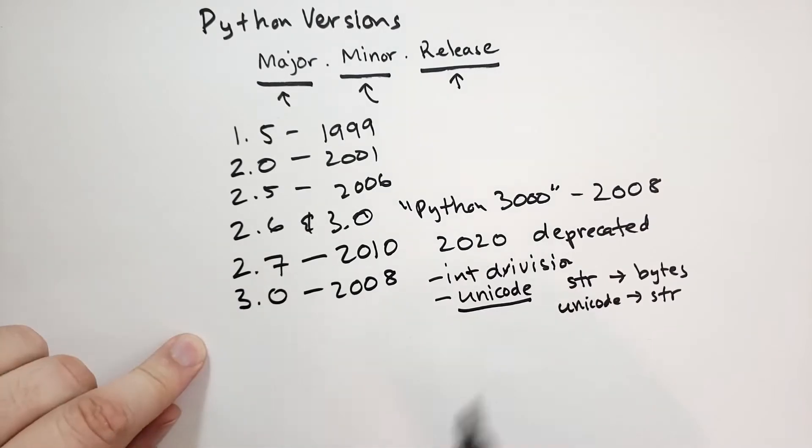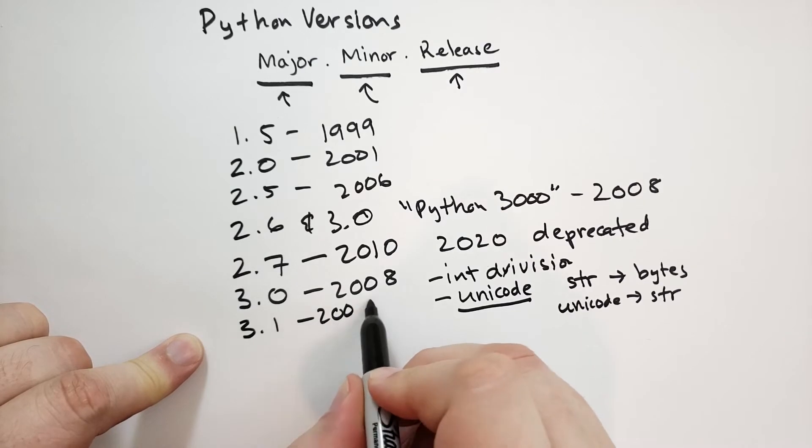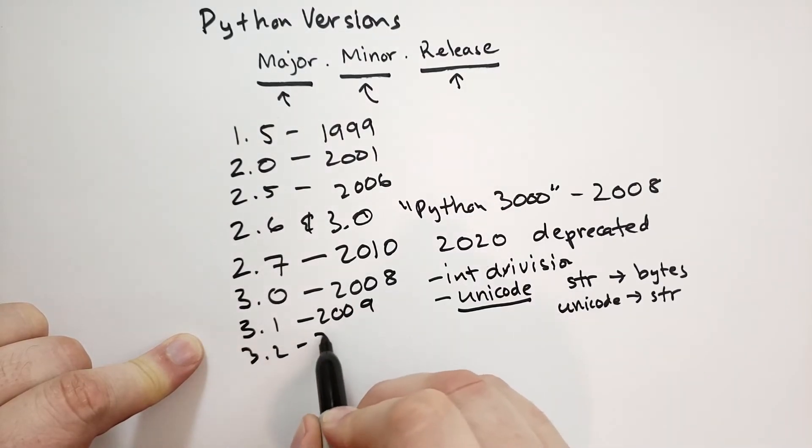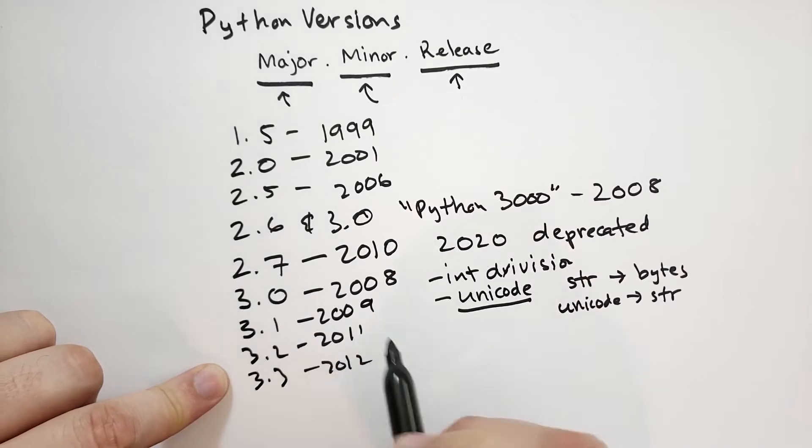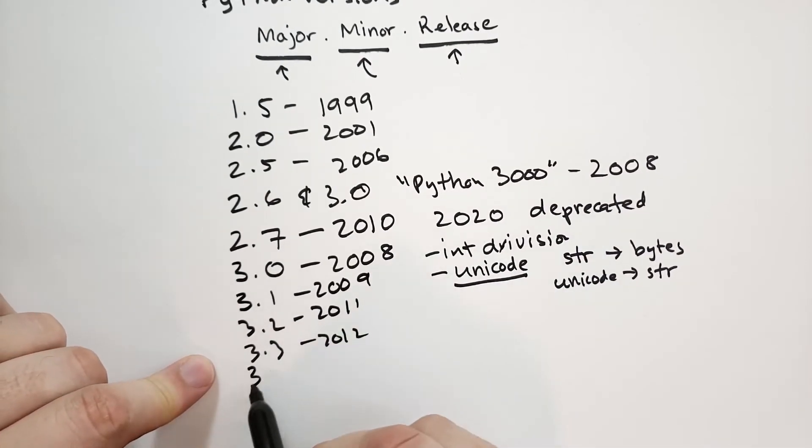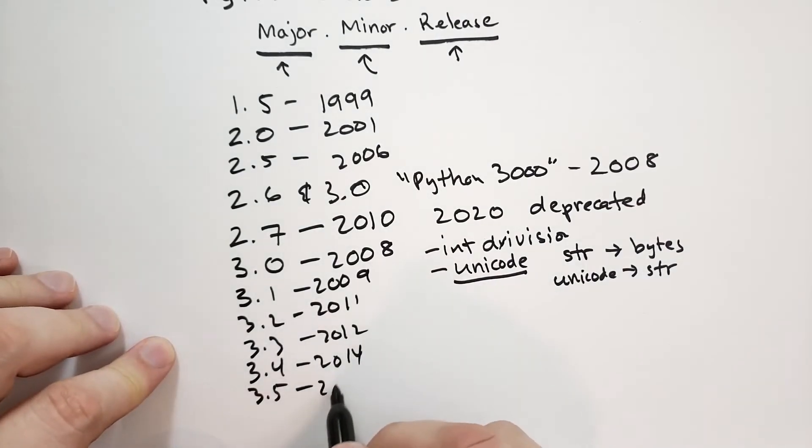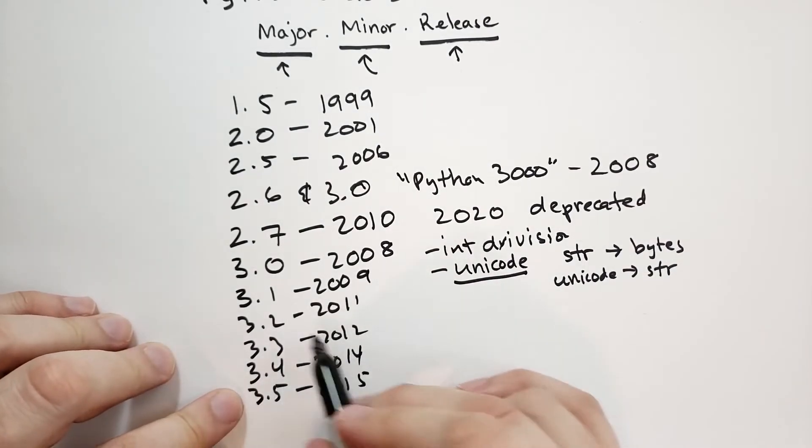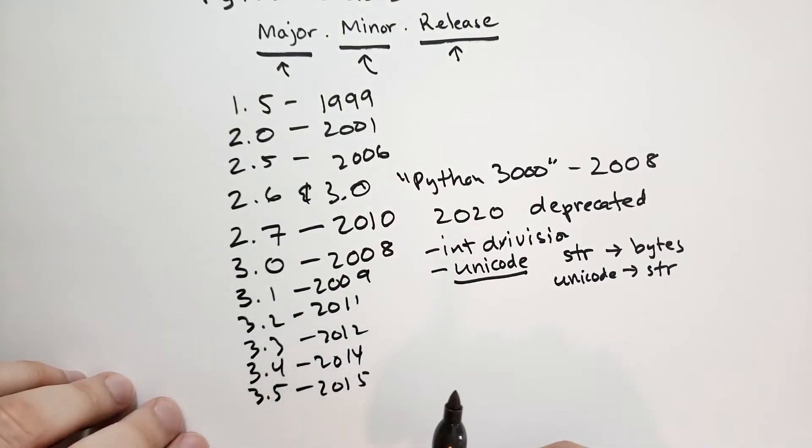So 3.0, 3.1 came out in 2009, I think, 3.2 was 2011, and then 3.3, 2012. You can see there's pretty regular releases here. Let's scroll up a little bit more there. 3.4 came out in 2014, and then 3.5, I remember 3.5 is when 3.0 really started to look good. I think this is when it, somewhere around this time period, Python 3 became faster than Python 2, or at least comparable.